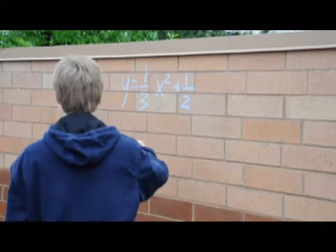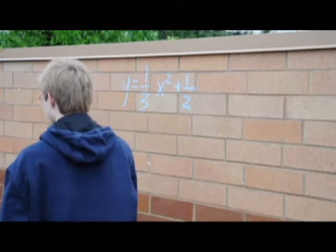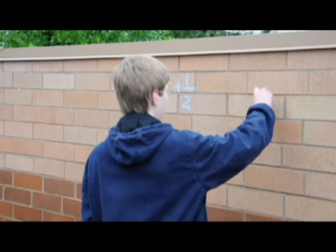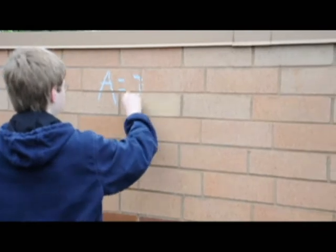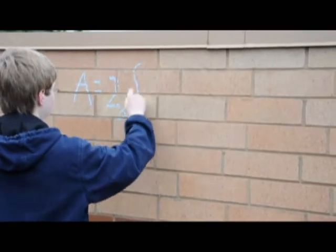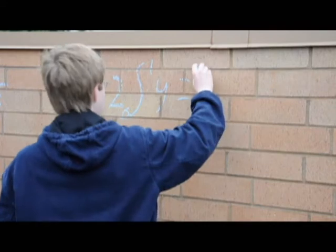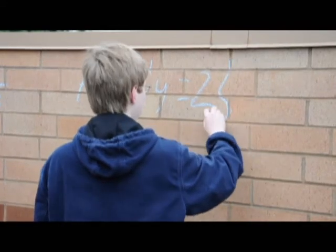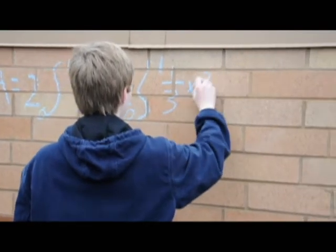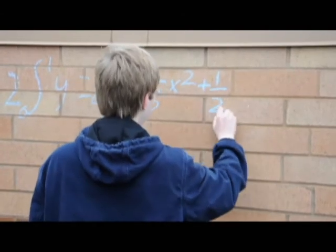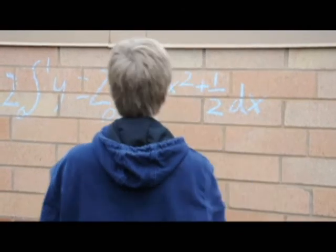Since it is symmetrical, we can say area equals two times the integral from zero to one of one-third x squared plus one-half. Don't forget the dx. Thank you.